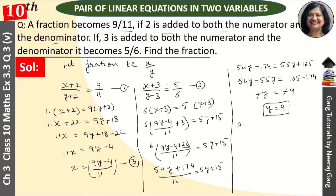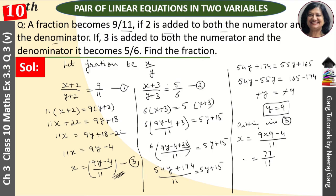इस y की value को third equation में put करेंगे. x = (9 × 9 − 4) upon 11. 9 × 9 = 81, 81 − 4 = 77. 77 upon 11 — 11 से cancel होकर x = 7.